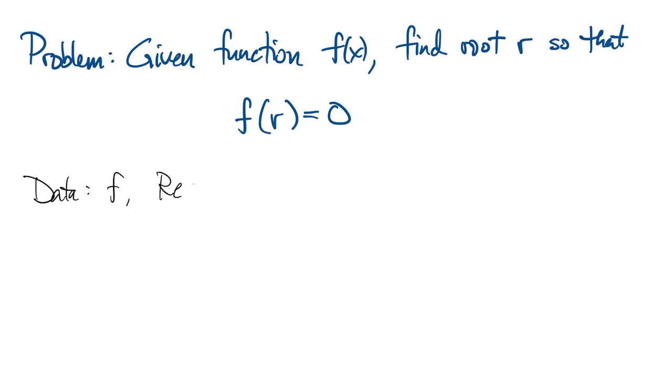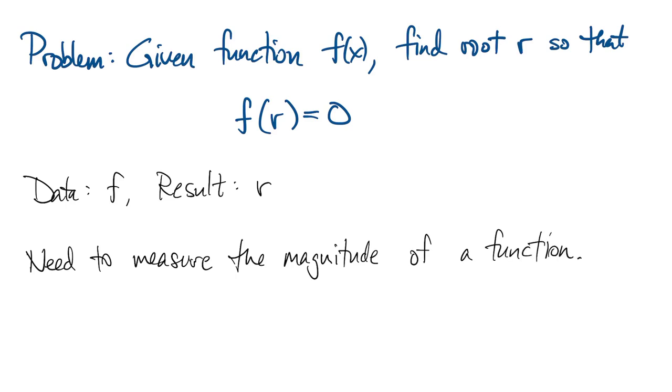The data to the problem is the function f and the result is the root r. Because we've got data in the form of a function and we're going to be perturbing that to look at the condition number, we need some way of measuring the magnitude of a function, similar to what we did with norms.